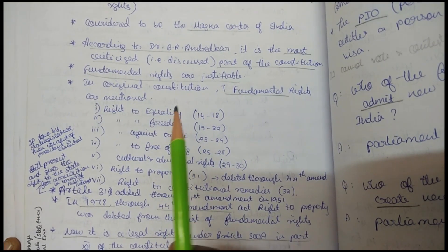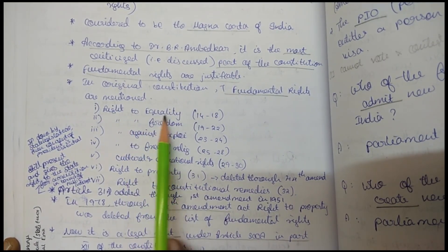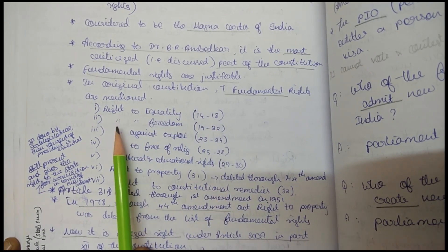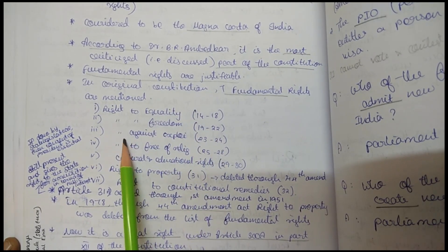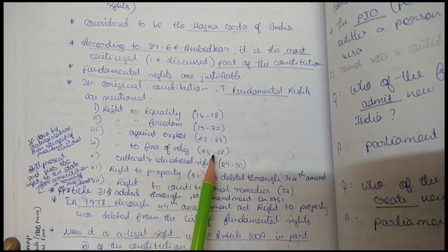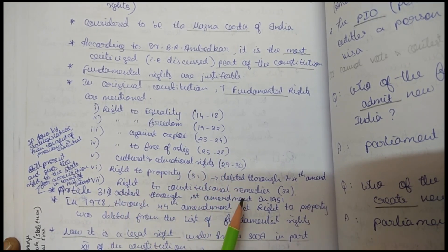The fundamental rights and their articles are as follows: Right to equality covers Articles 14 to 18. Right to freedom covers Articles 19 to 22. Right against exploitation covers Articles 23 and 24. Right to freedom of religion covers Articles 25 to 28. Cultural and educational rights cover Articles 29 to 30. Right to constitutional remedies is Article 32.